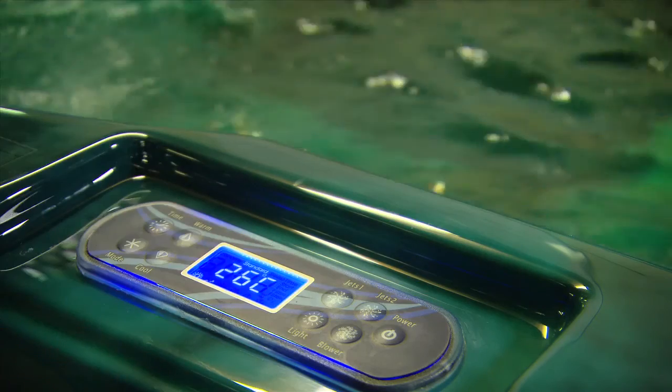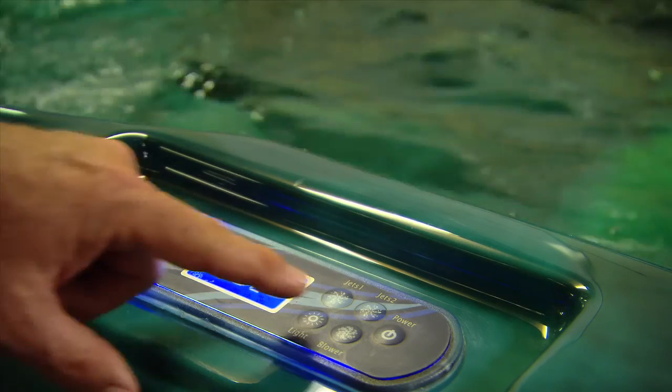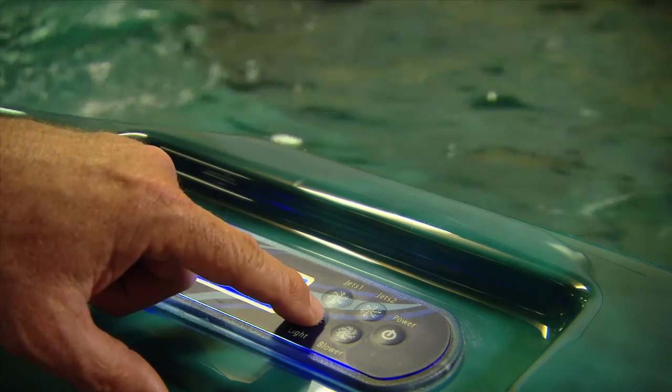To turn your lights on, press the light button. Press it again and the lights turn off. Additional presses will turn the lights back on but with a different color or effect.